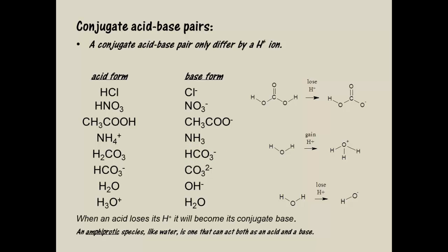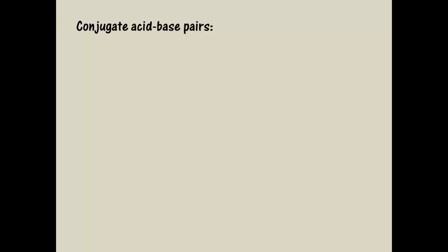So in summary: when an acid loses a proton, it will become its conjugate base. When a base gains a proton, it will become its conjugate acid. Just remember, the acids have the hydrogen ion and the bases don't. To help reinforce that, let's take a look at some proton transfer reactions and equations to help you see this.